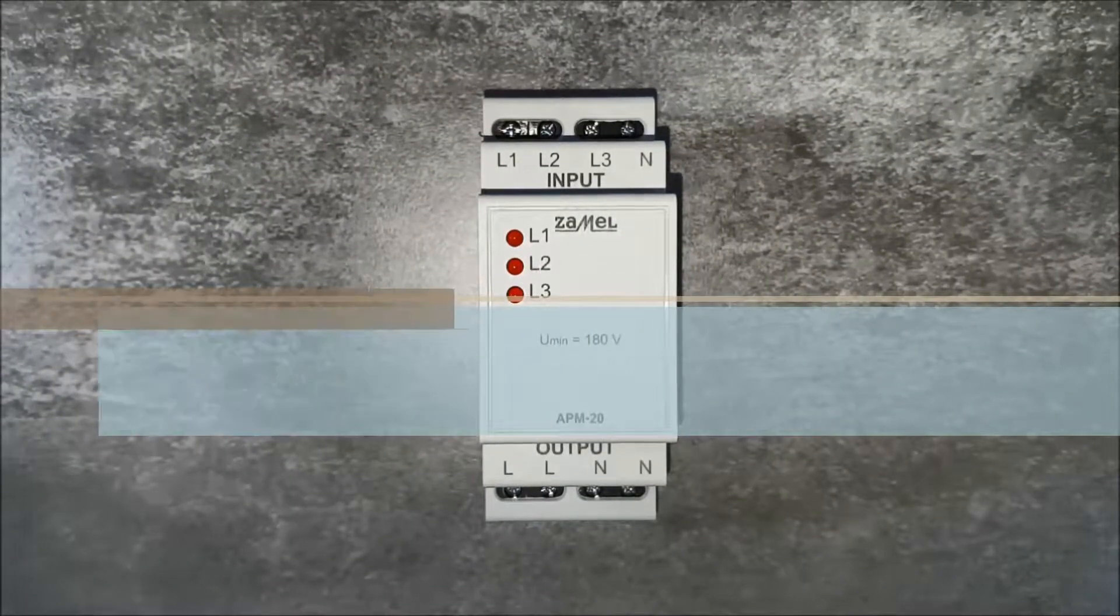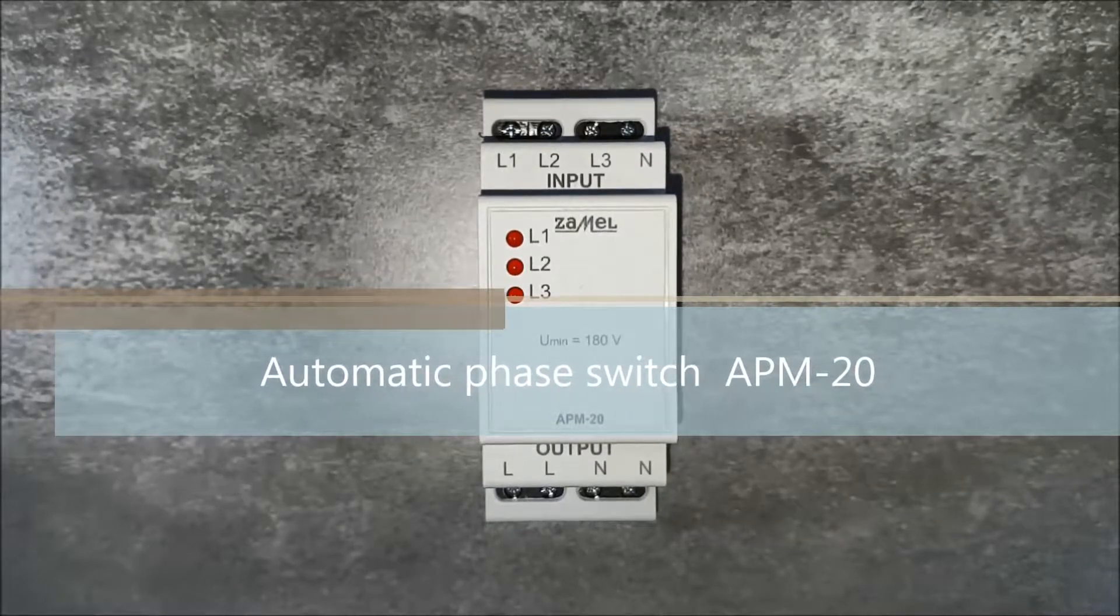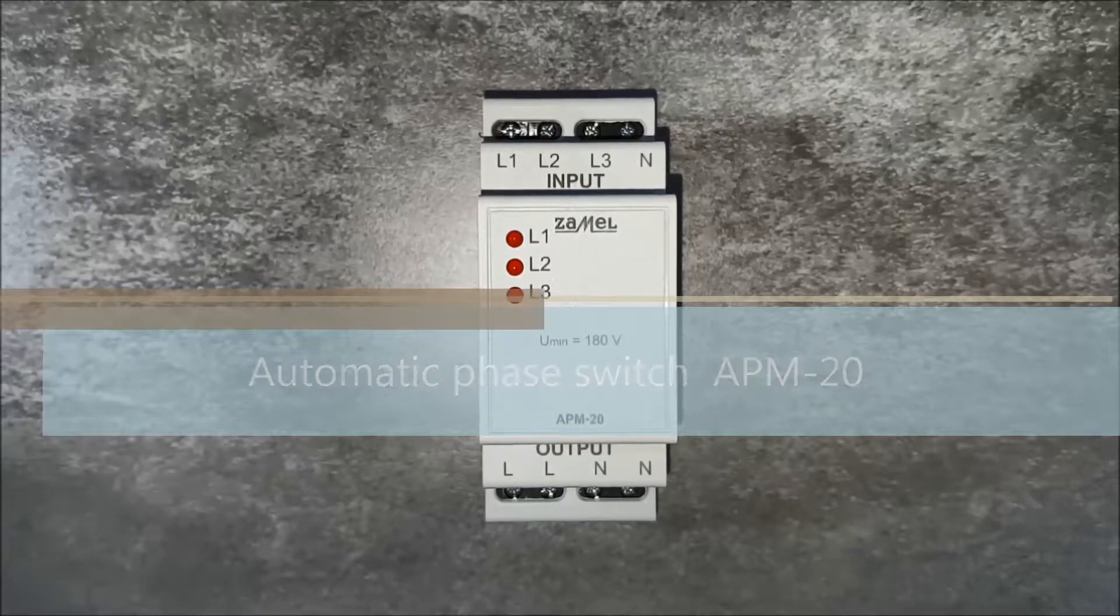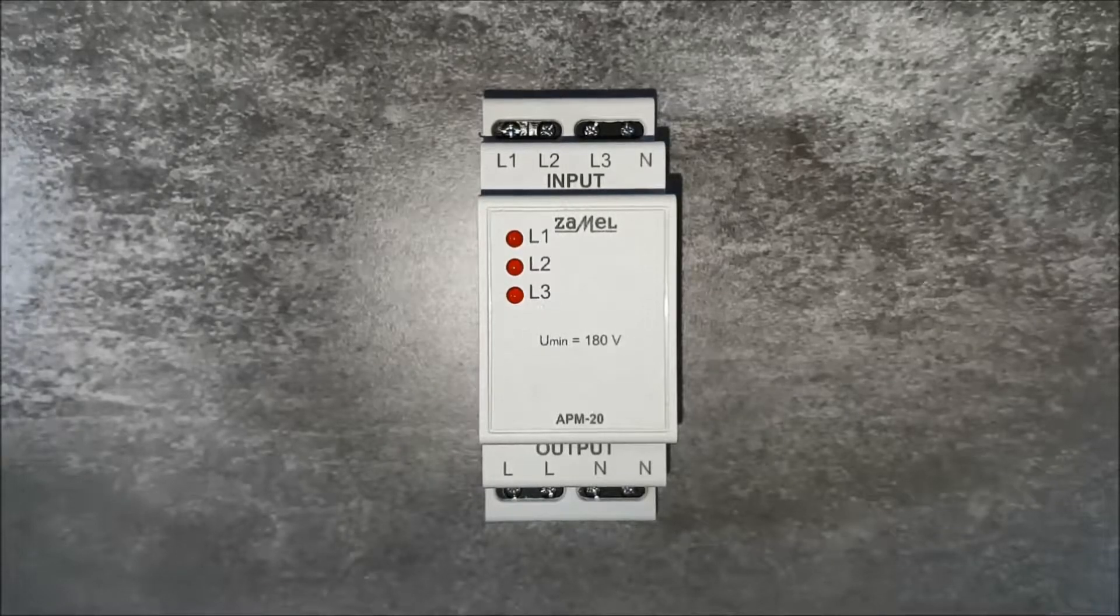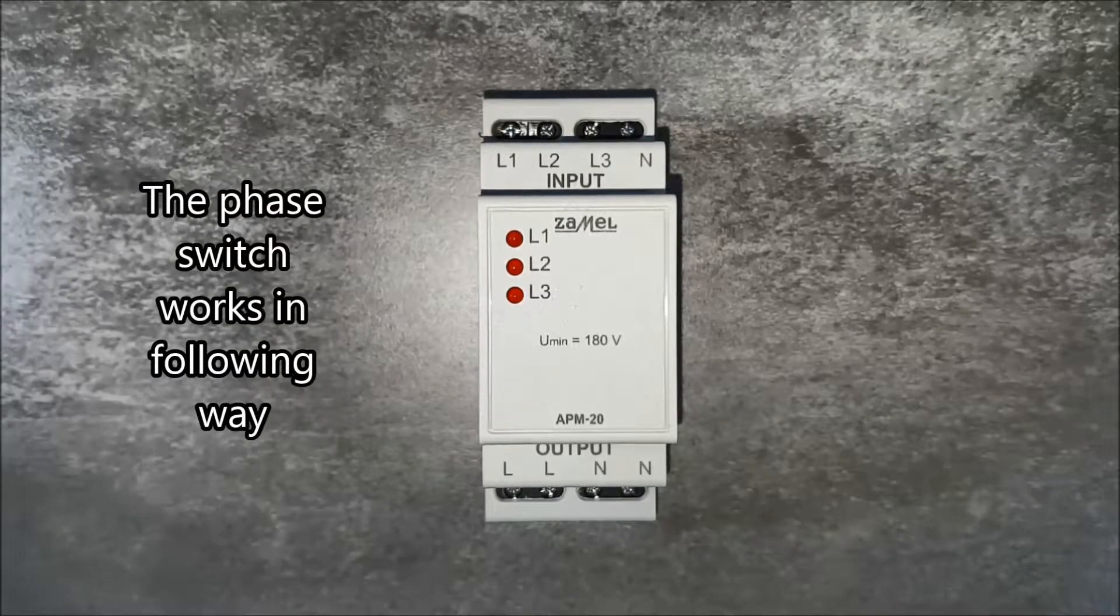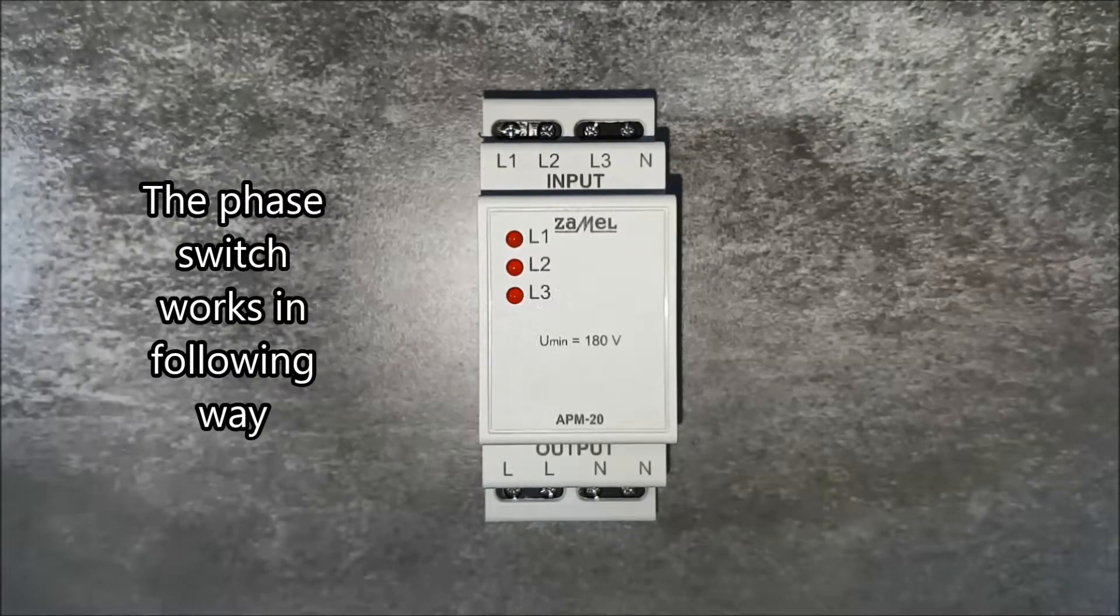Automatic Phase Switch APM 20 is a device which protects continuous power supply for single phase circuits. The phase switch works in the following way.